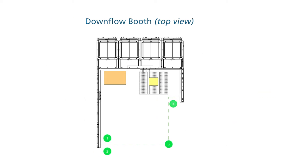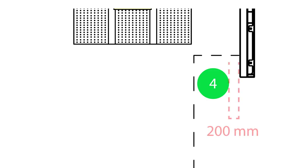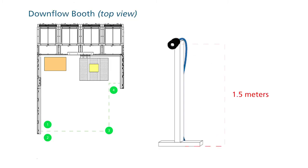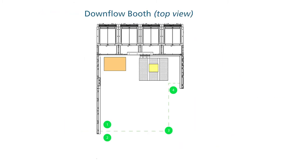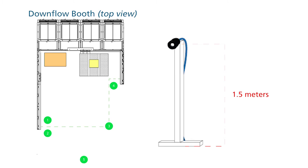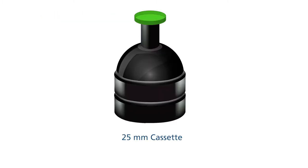Sampling point 5 is 1,200 mm from the safe line of the booth at a height of 1.5 meters. This is a filter cassette fitted with a 25 mm filter of 0.1 micropore size.